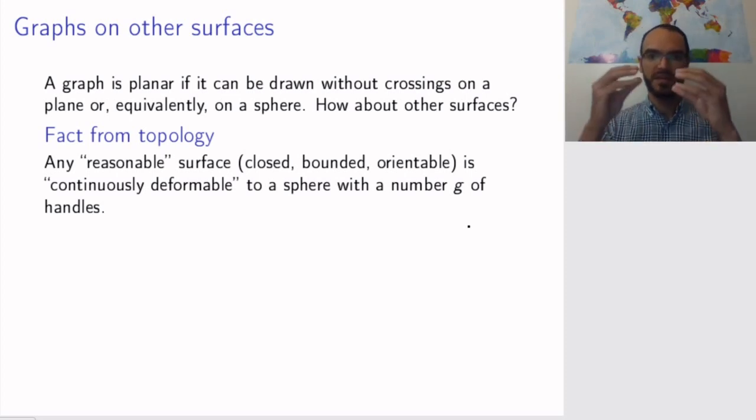You don't worry so much about exact areas and lengths. It's not like geometry. Topology is just worrying about the shape of things. And topology tells you that any reasonable surface is essentially a sphere with some number of handles on it.